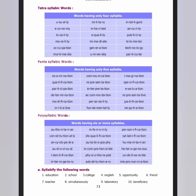Pentasyllabic — penta means five, tetra means four. An example of a five-syllable word is 'examination' — ex-am-i-na-tion. Six syllables and more is called polysyllabic — for example, 'identification' — i-den-ti-fi-ca-tion.